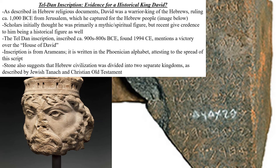Now we'll discuss some additional archaeological finds relating to the Hebrew civilization. Perhaps one of the most important from this period is the Tel Dan inscription. As described in Hebrew religious documents, David — King David — was a warrior king of the Hebrew people, ruling from about 1000 BCE in Jerusalem, which he captured for the Hebrew people.